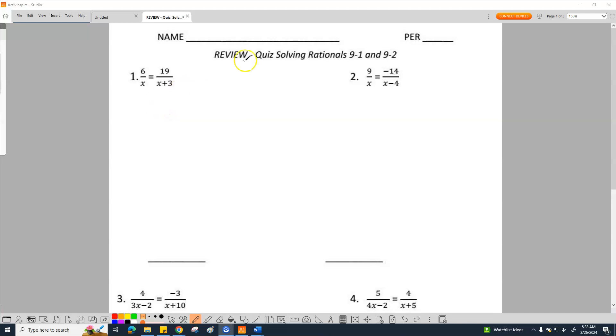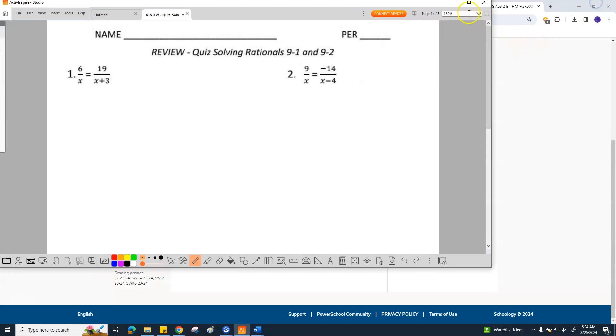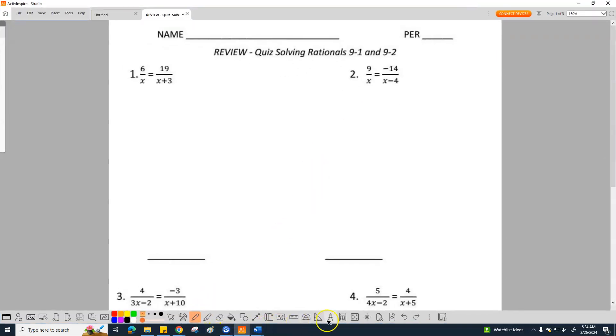There's two things you should think of when you see solving rationals. Number one is common denominators, and number two is making sure you understand that the denominator can never actually equal zero. So I'm going to start with that part on number one. The first part I'm going to start with on number one is I'm going to start with what it can't equal.